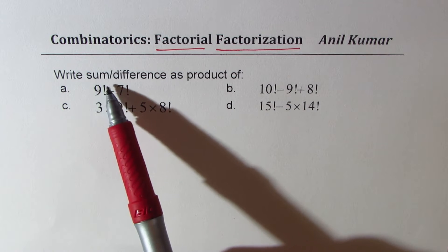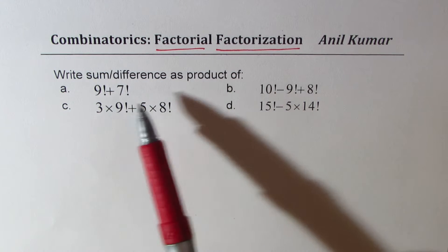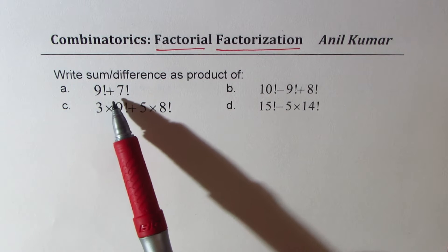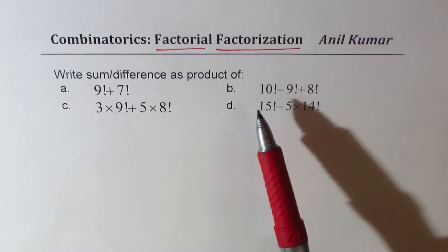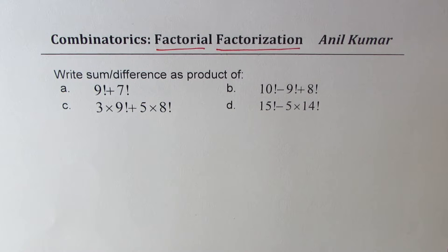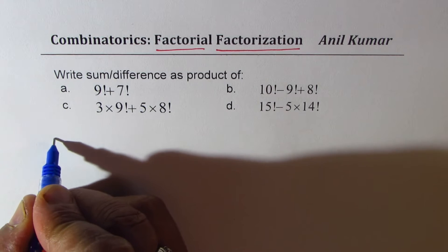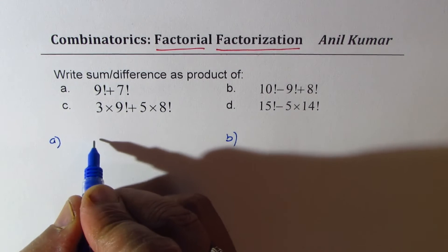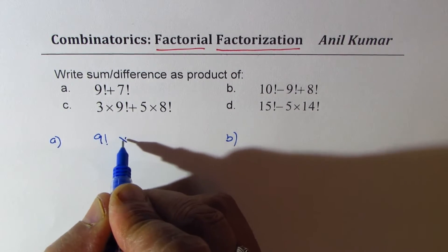Here are four practice questions for you: write the sum and difference as a product of these numbers. The first one is 9 factorial plus 7 factorial. Then we have 10 factorial minus 9 factorial plus 8 factorial. C is 3 times 9 factorial plus 5 times 8 factorial. And D is 15 factorial minus 5 times 14 factorial. You can always pause the video, answer this, and then look into my suggestions.